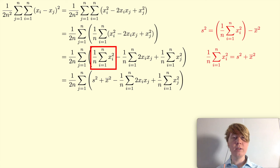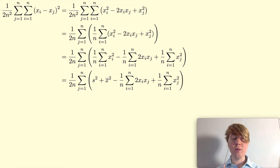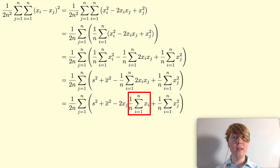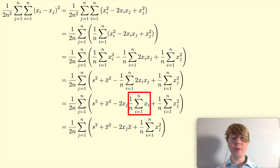Next we'll deal with the second sum. You'll spot here that we're summing over i, so you can take out this factor of 2xj. Then you can see that 1 over n times the sum from i equals 1 to n of xi is just the sample mean, so we can replace that by x-bar. And that's the second inner sum dealt with.